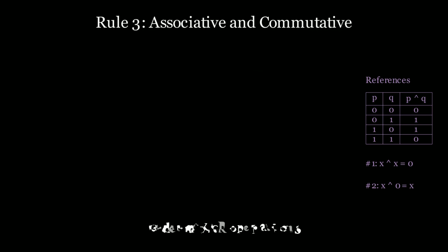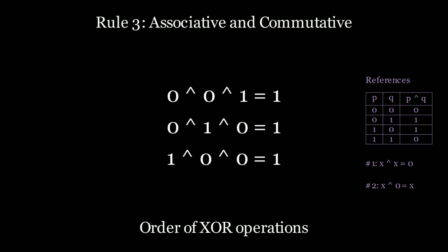And let's look at the third rule. The third rule is associativity and commutativity. So if in this example if we take 0 XOR 0 XOR 1 it's equal to 1. If we take 0 XOR 1 XOR 0 it's equal to 1. And likewise 1 XOR 0 XOR 0 equals 1 and it doesn't matter which operation you do first. So let's keep track of this rule as well on the right-hand side.